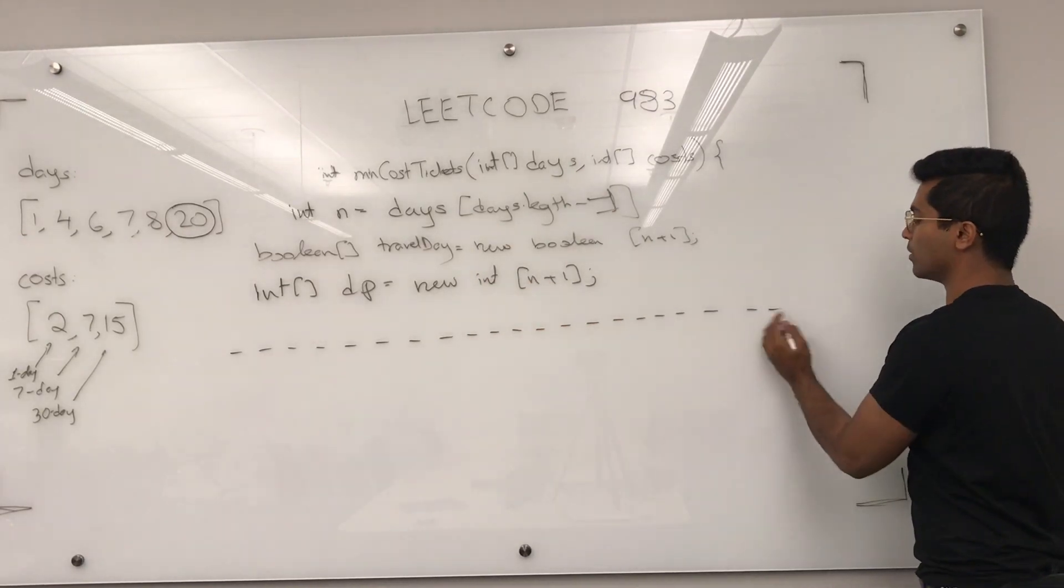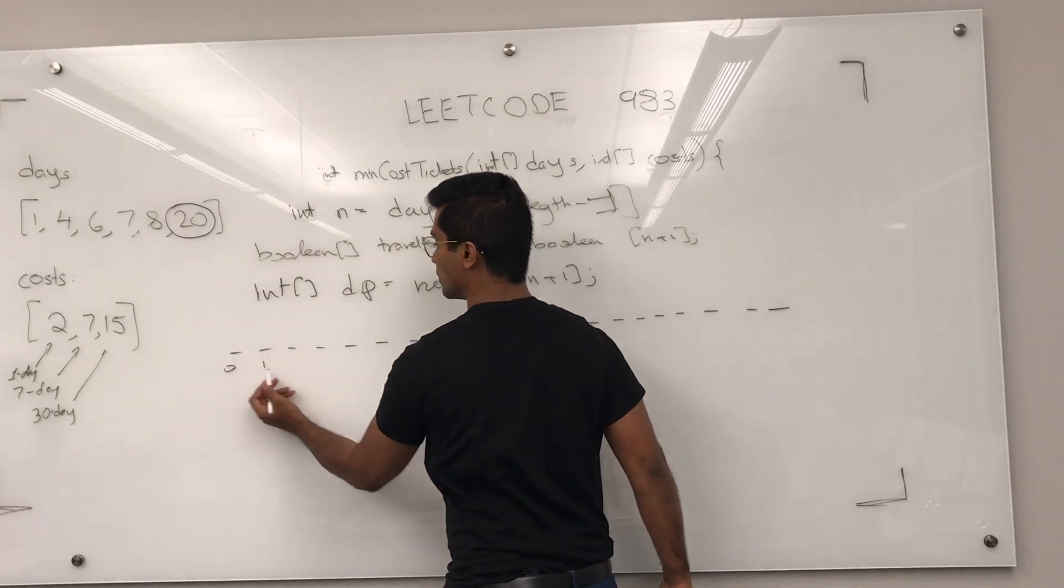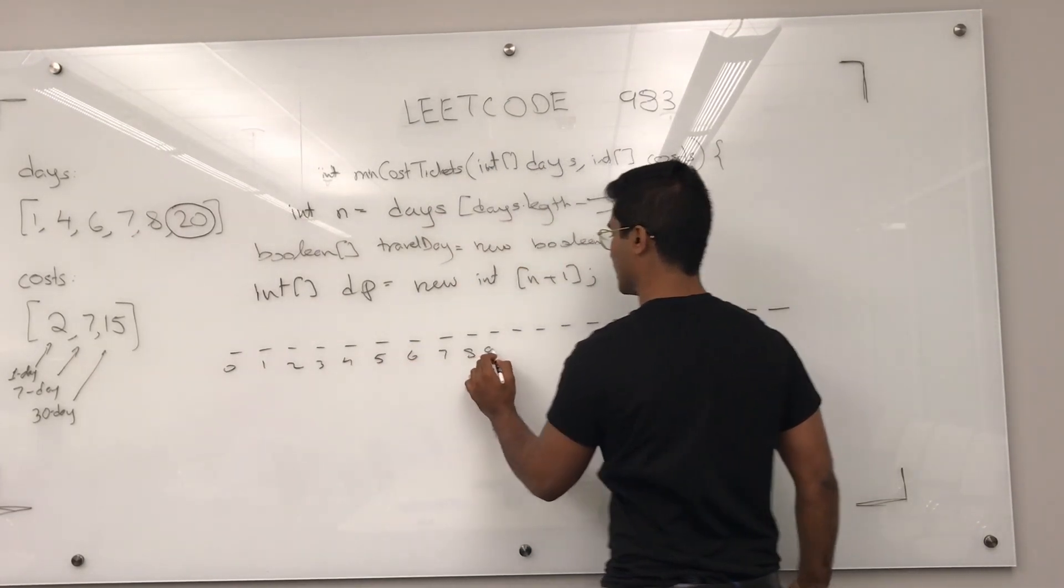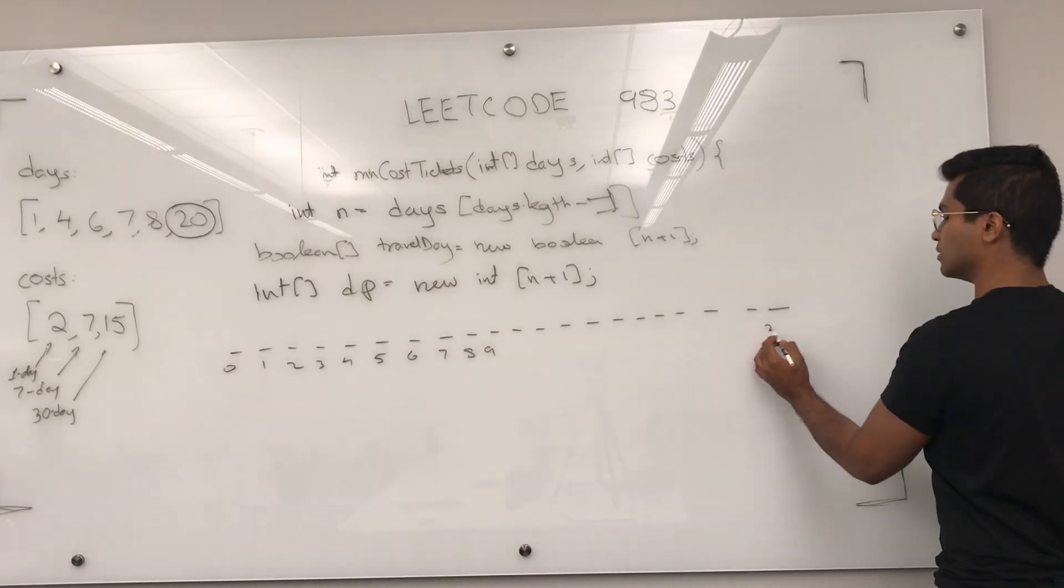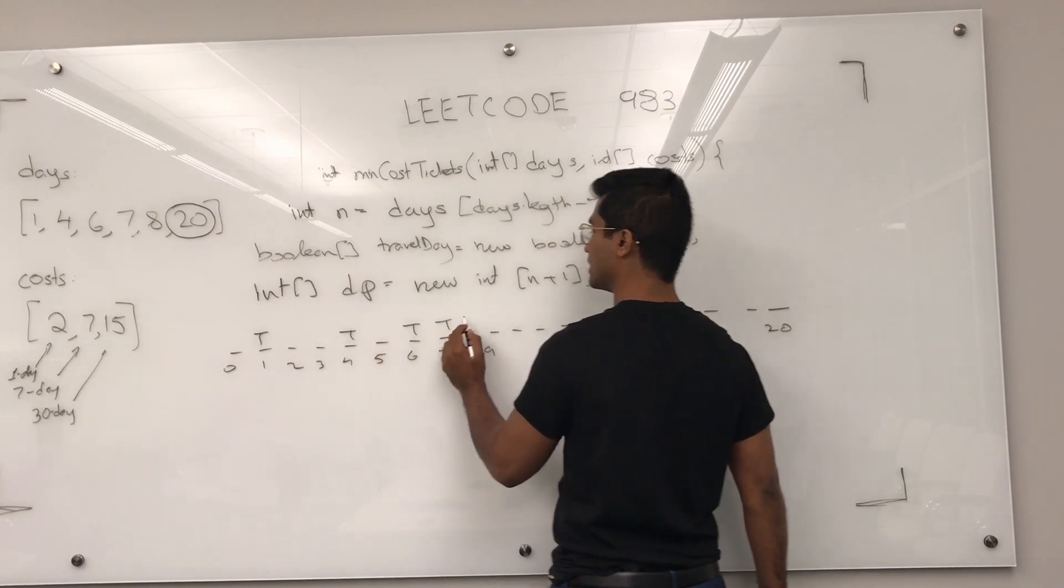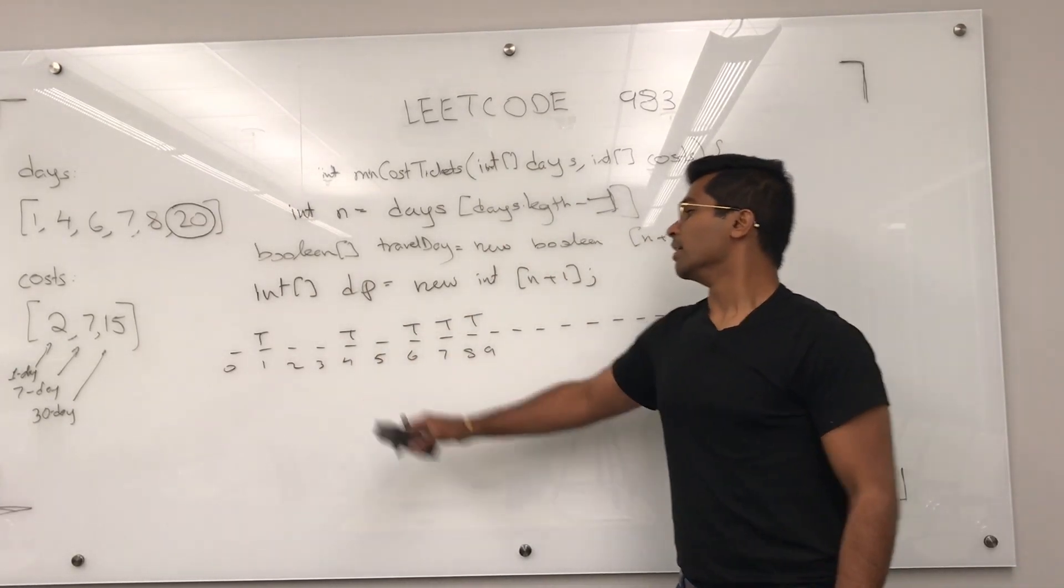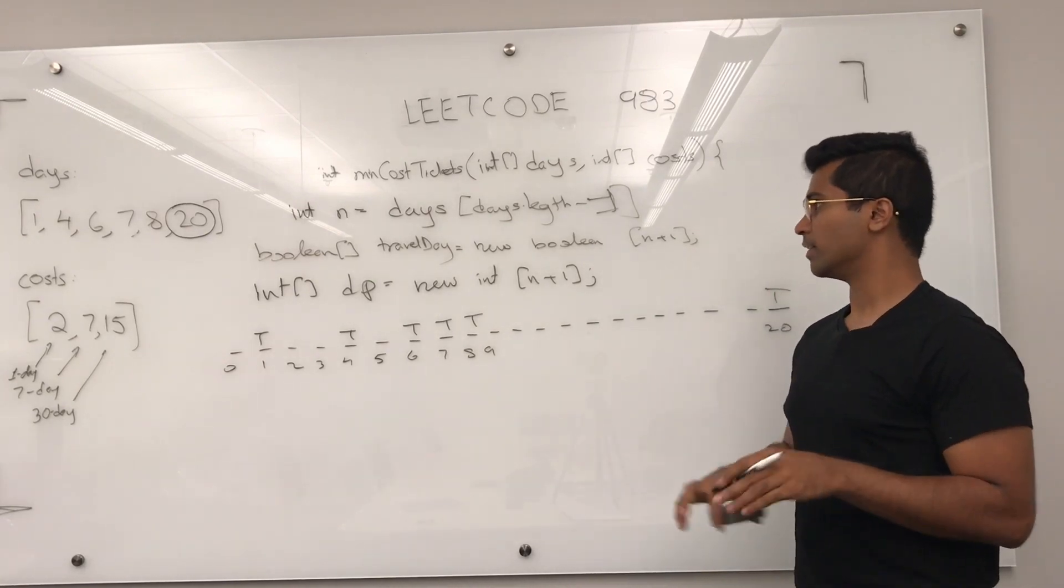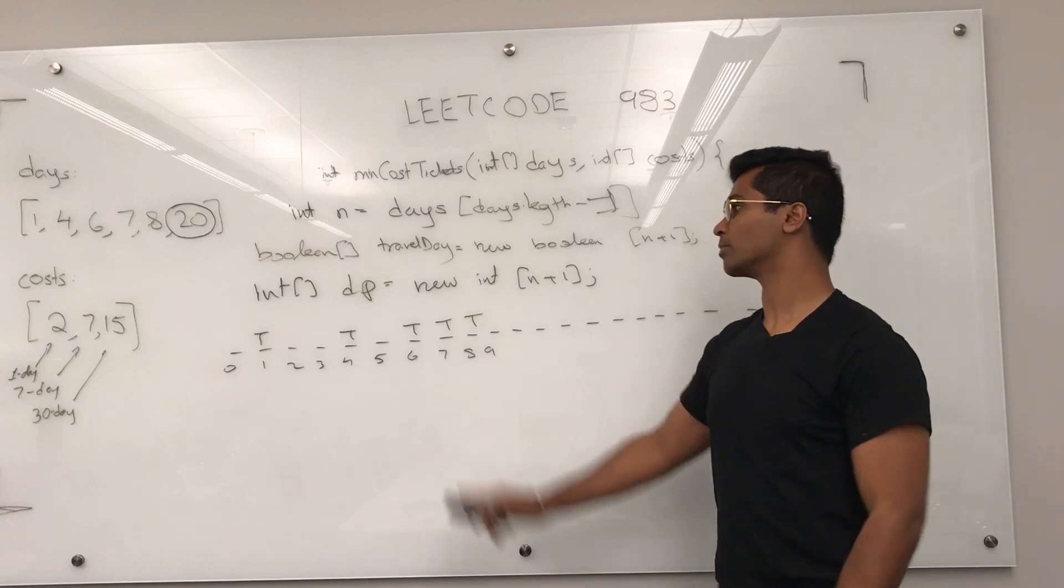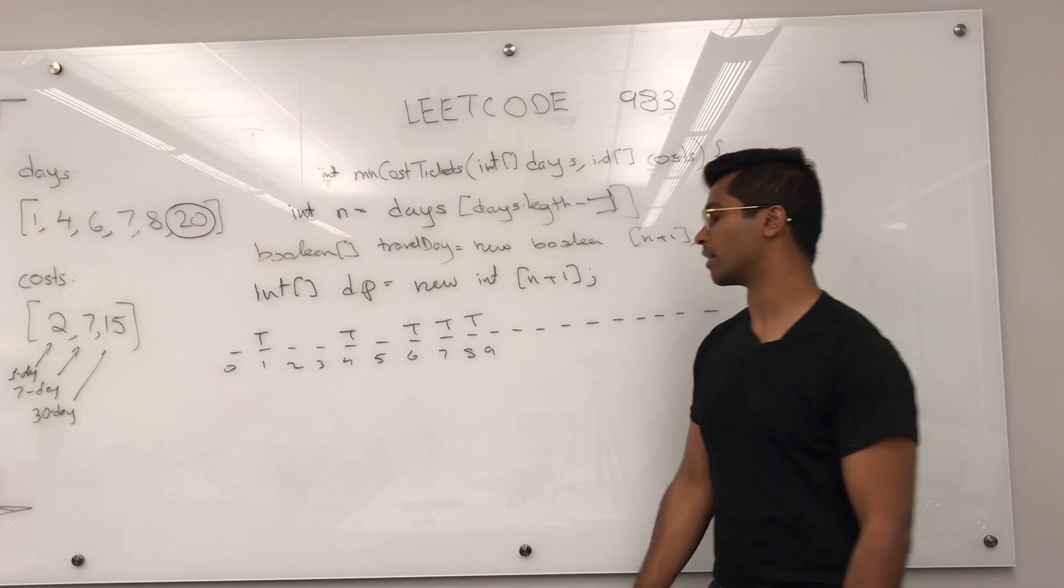So every day that we have to travel, I'm going to put true. So this would be indices 0 through 20. So we have to travel on the first day, the fourth day, 6th day, 7th day, 8th day, and the 20th day. Now, the DP array is going to be the one that stores the cost, but we're going to use the travel day to decide whether we have to even pay on a given day or not.